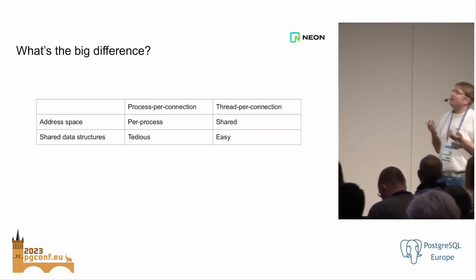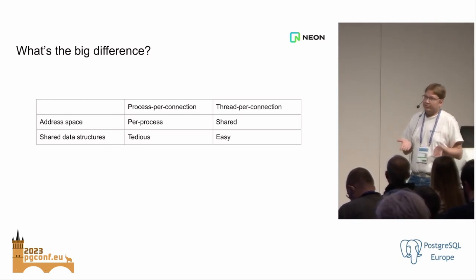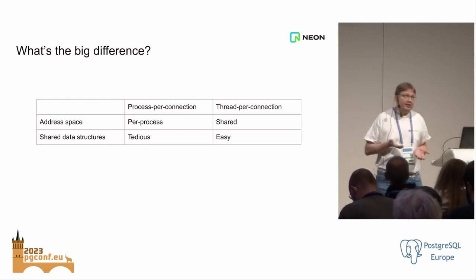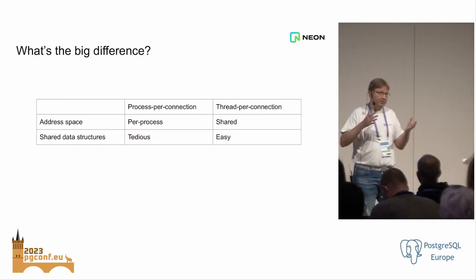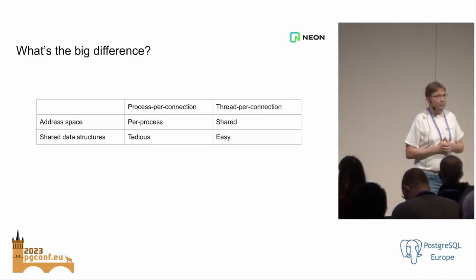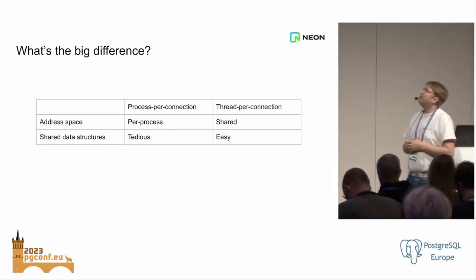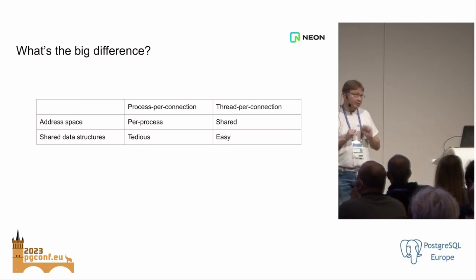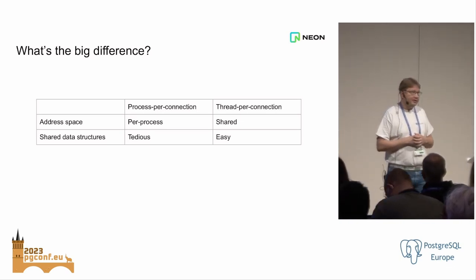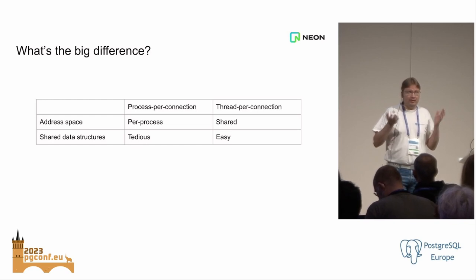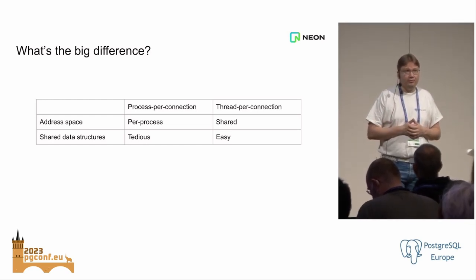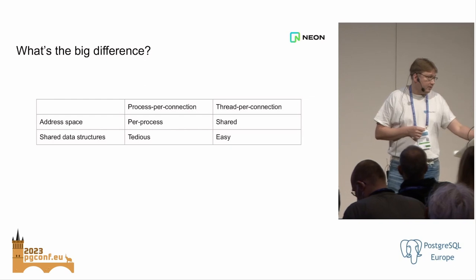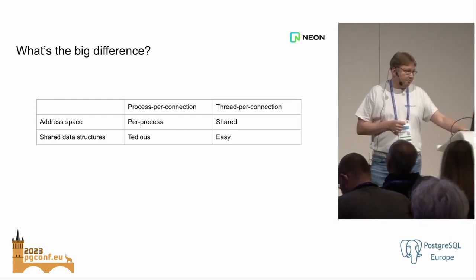The big difference is that in a multi-process architecture, you have a separate address space for each process, and you have to be explicit when you're going to share something. If you want to share something, you need to pre-allocate space for it in shared memory and store it there — you can't have it anywhere else. Whereas in a threaded architecture, you have just one address space. You can pass pointers between threads, and everything is shared by default — any thread can access any piece of data. If you don't do the locking right, you will get crashes, but that's no different from multi-processing.